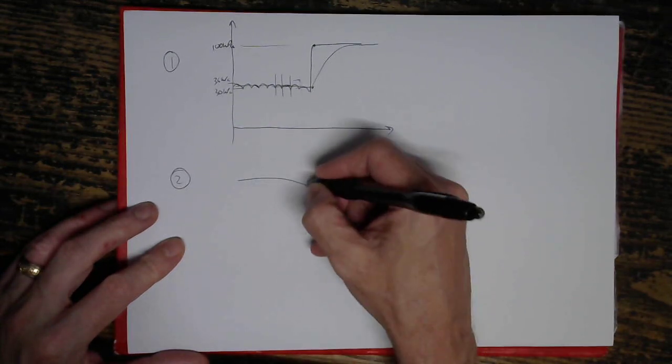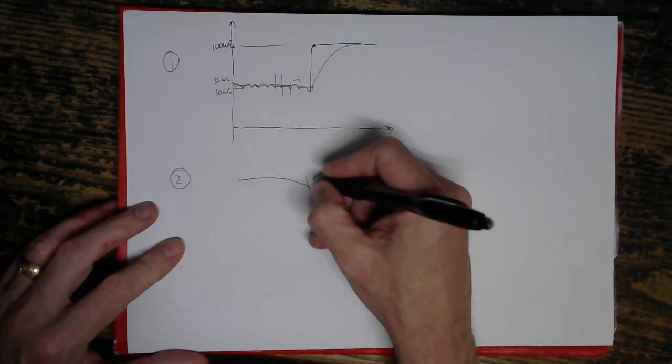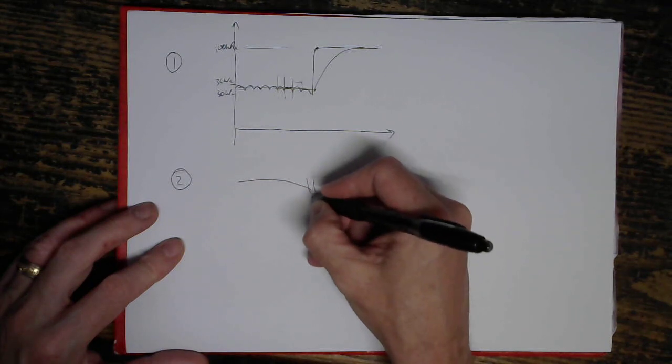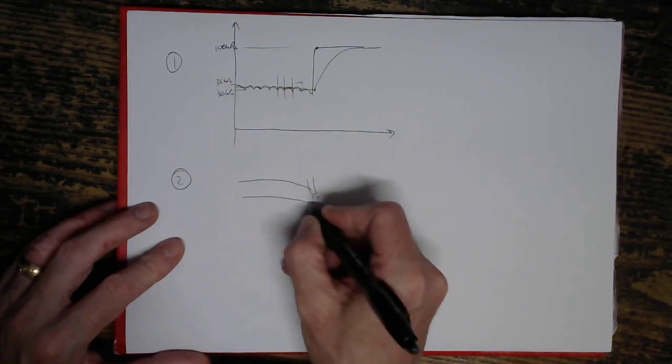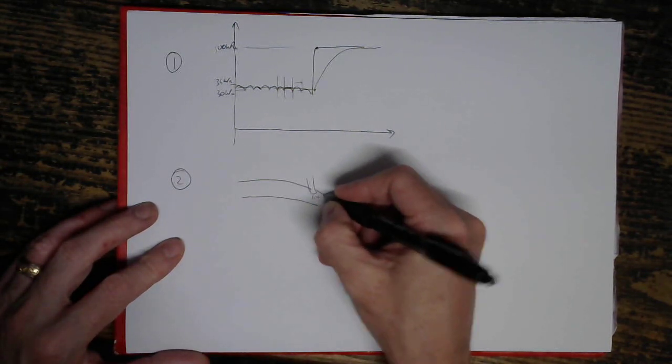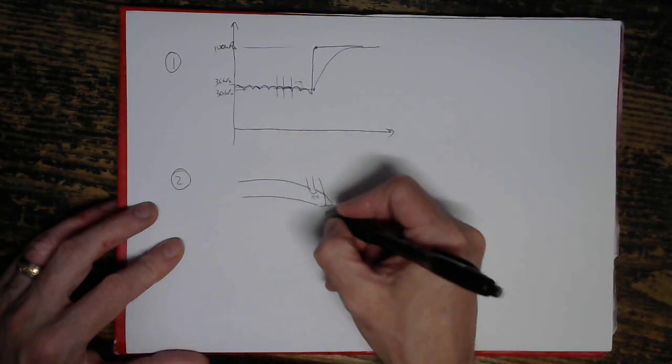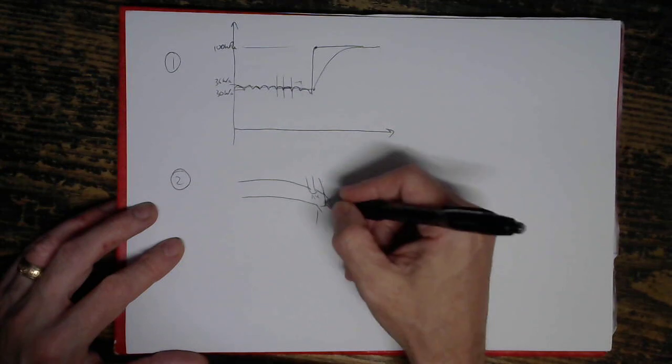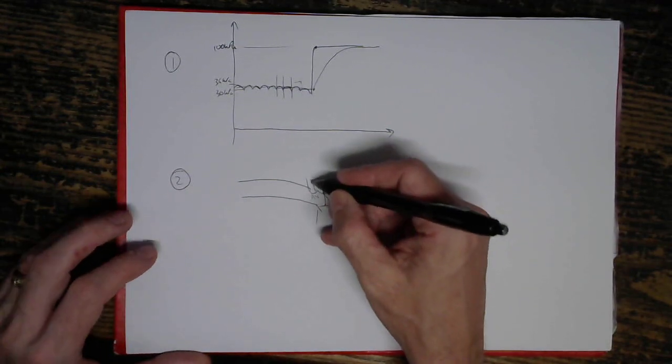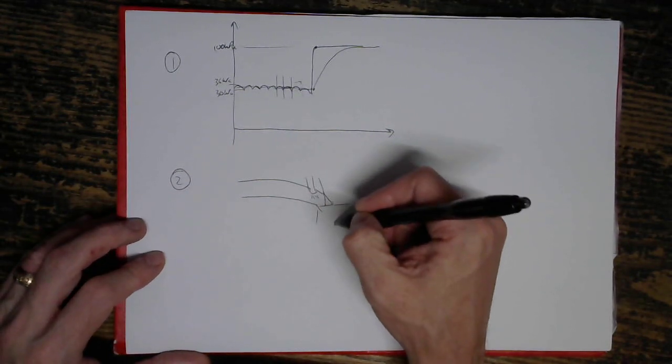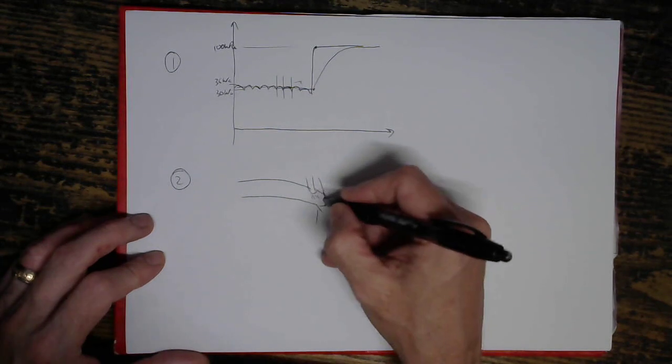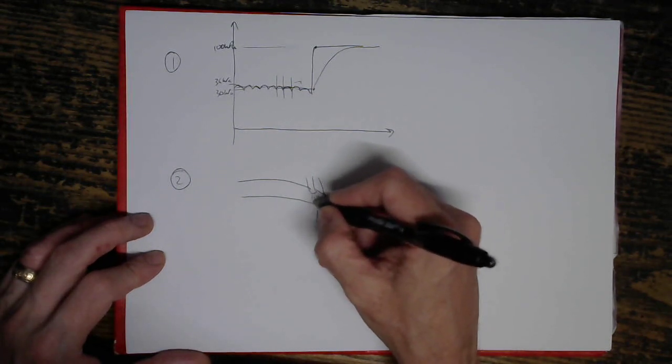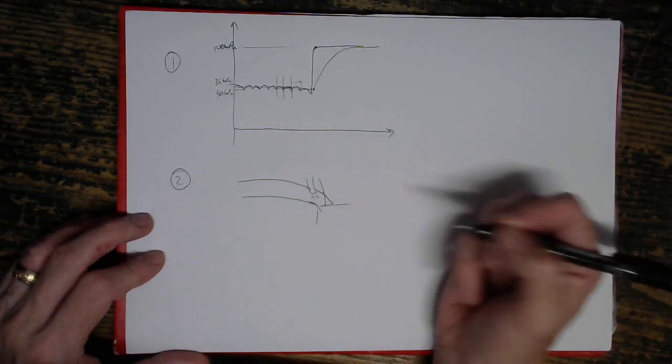Sorry about my drawing, but basically if you've got an injector here and that's squirting fuel, there's the intake runner that goes into the engine this way. Whatever you squirt here, not all of it goes directly into the engine. Some percentage of it will end up on the runner wall, forming a puddle there.